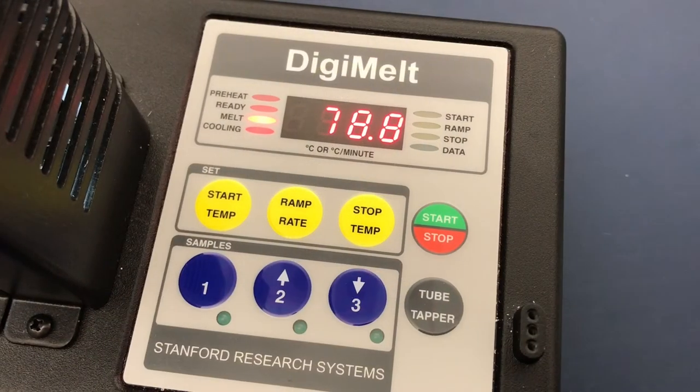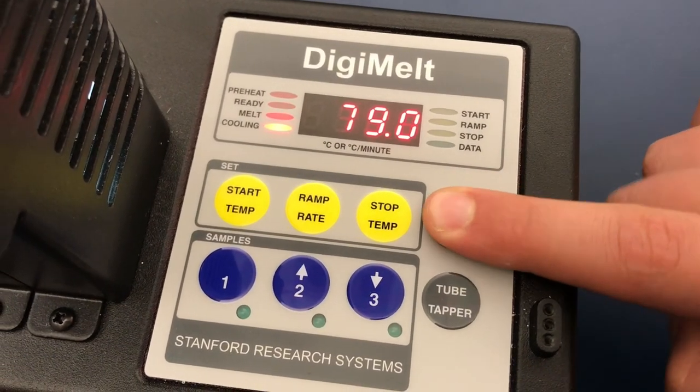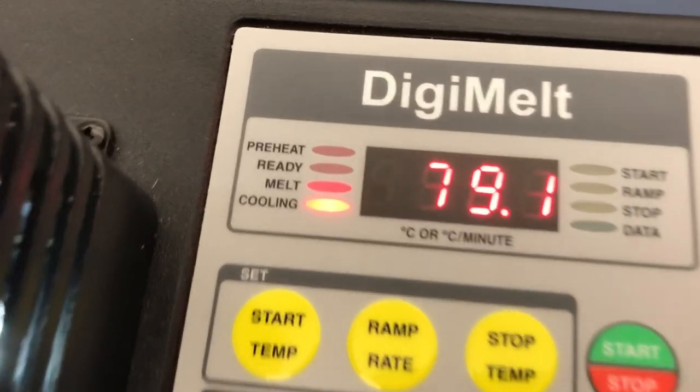To turn off the DigiMelt, press stop and allow it to cool. Then press the switch behind the DigiMelt.